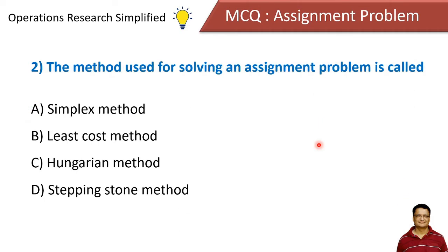The method used for solving an assignment problem is called: simplex method, least cost method, Hungarian method, or stepping stone method. The correct answer is Hungarian method. Hungarian is the name of the scientist who invented this method.